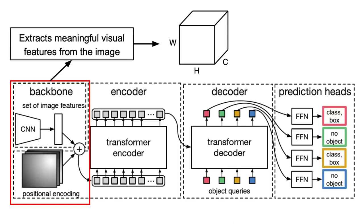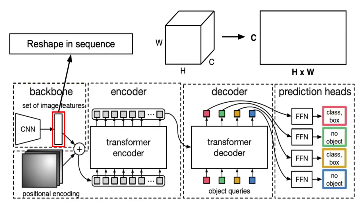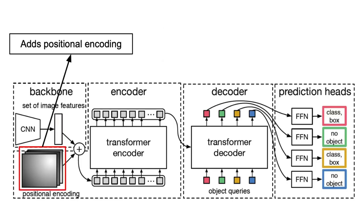Pretty standard stuff until now. Those features are then fed into the encoder of the transformer. But before doing that, because the encoder expects a set of embeddings, they are rolled out in a sequence that contains H by W elements, each one having an embedding size C. Also, as in the original transformer paper, it adds positional encoding to keep track of where exactly each embedding is in the image.